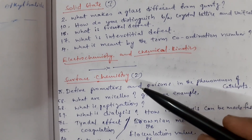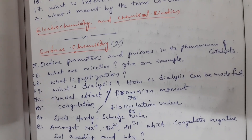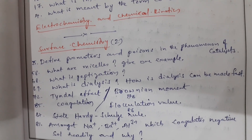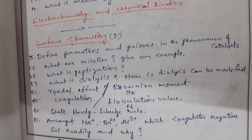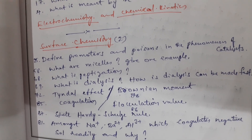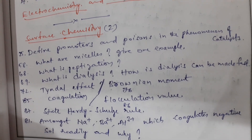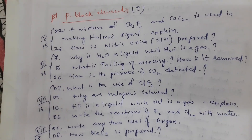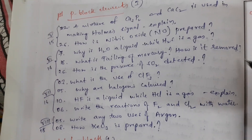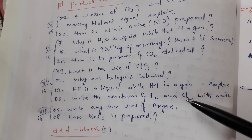Electrochemistry and Chemical Kinetics; Surface Chemistry — two questions will be coming from this chapter. These are the important questions. Please make a note. We move on to the next chapter: P-block elements — three will be coming from this chapter. Please note down.